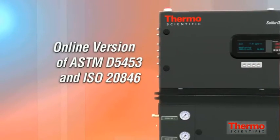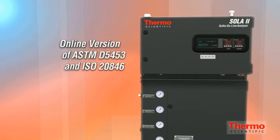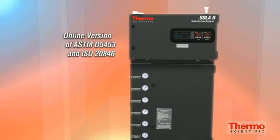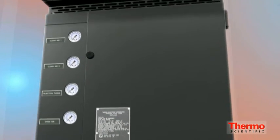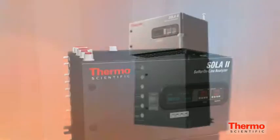The SOLA-2 is an online version of the well-accepted ASTM D5453 and ISO 20846. Each method describes the determination of total sulfur by sample combustion and pulsed ultraviolet fluorescent spectrometry.